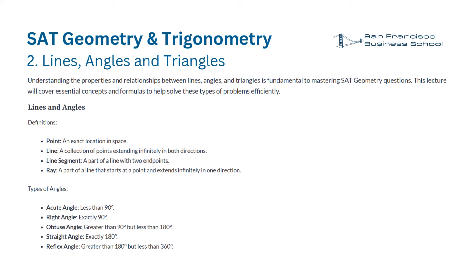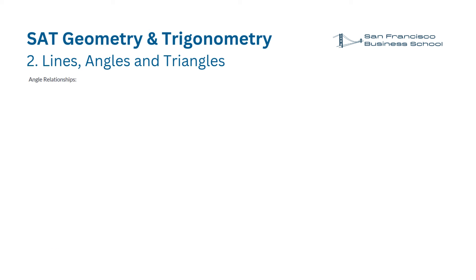Types of angles. Acute angle: less than 90 degrees. Right angle: exactly 90 degrees. Obtuse angle: greater than 90 degrees but less than 180 degrees. Straight angle: exactly 180 degrees. Reflex angle: greater than 180 degrees but less than 360 degrees.